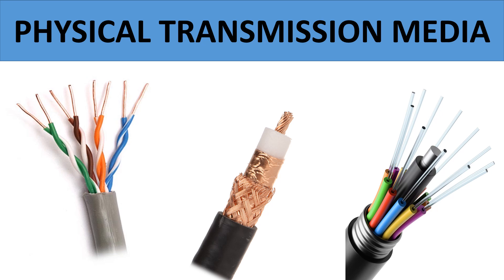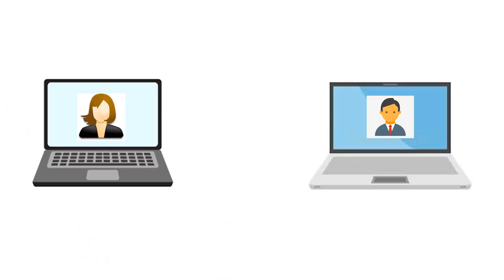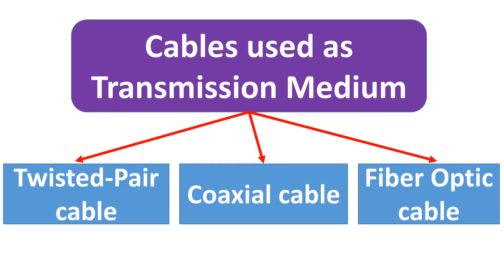Physical Transmission Media. The physical path over which communication takes place is called the physical transmission medium. Types of cables used as transmission medium are twisted pair cable, coaxial cable, and fiber optic cable.